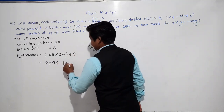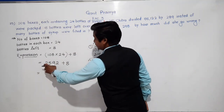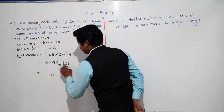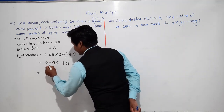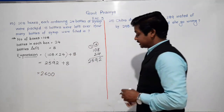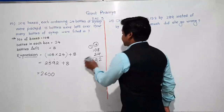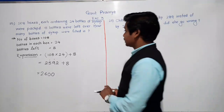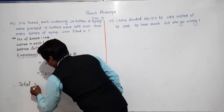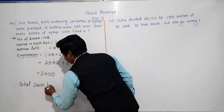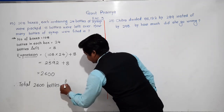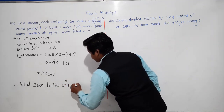Now we add 8 to 2592. 8 plus 2 is 10, 0 comes down, carry 1. 9 plus 1 is 10, 0 comes down, carry 1. 5 plus 1 is 6, and 2 remains. So there are a total of 2600 bottles of syrup. Total 2600 bottles of syrup were filled in.